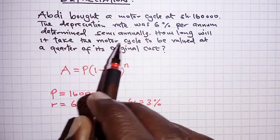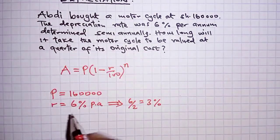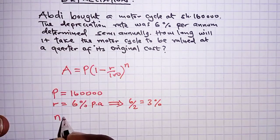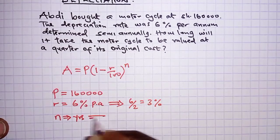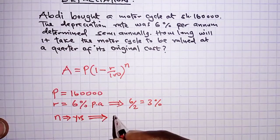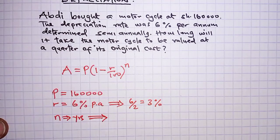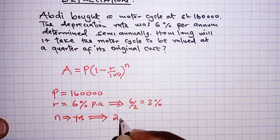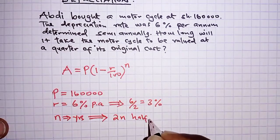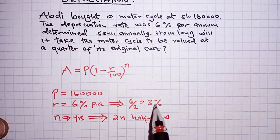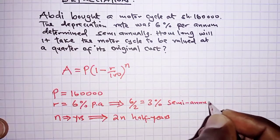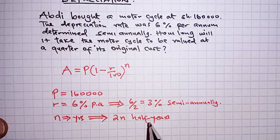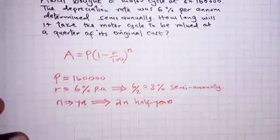We are asked how long it will take the motorcycle to be valued at a quarter of its original cost, so we are required to determine the value of n — remember n here is in years. Since it is determined semi-annually, we need the number of half years in n years. In one year we have two half years, therefore in n years we have 2n half years. Remember, three percent is for half a year, or semi-annually — these terms are interchangeable and mean the same thing.